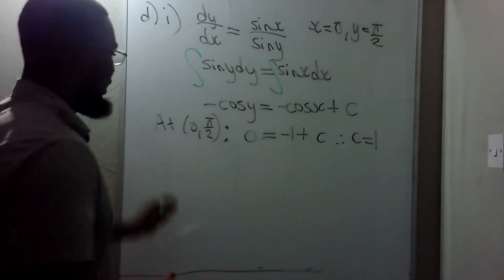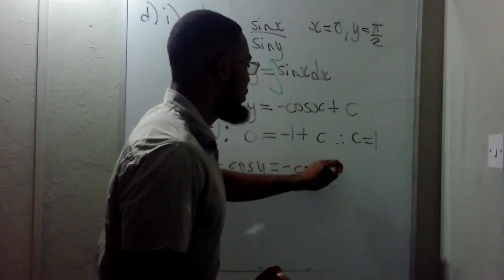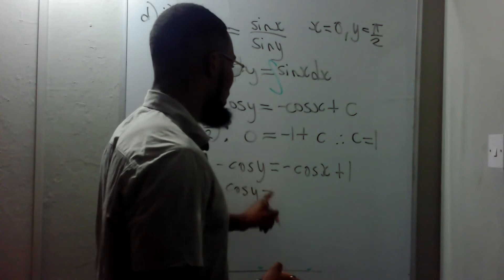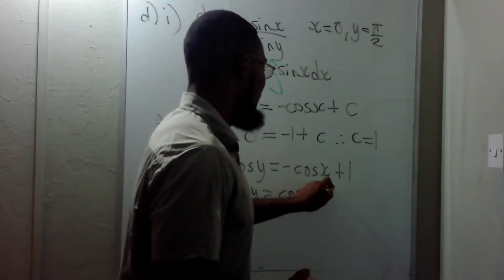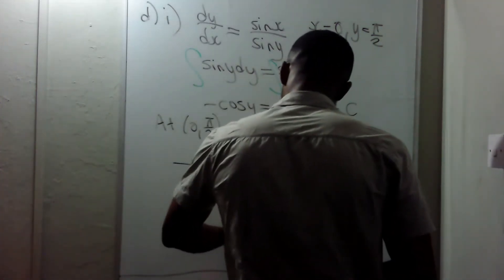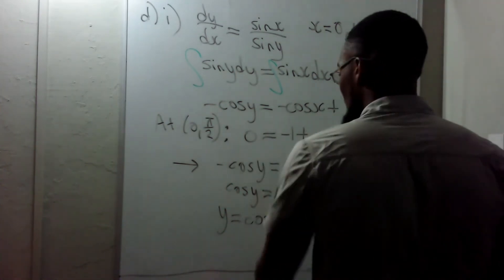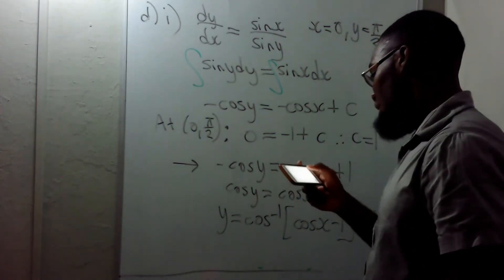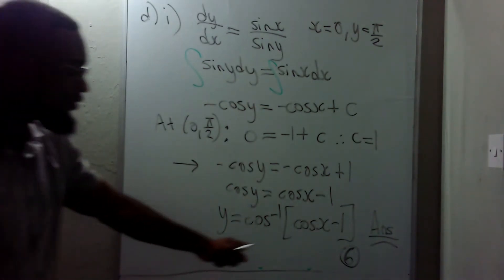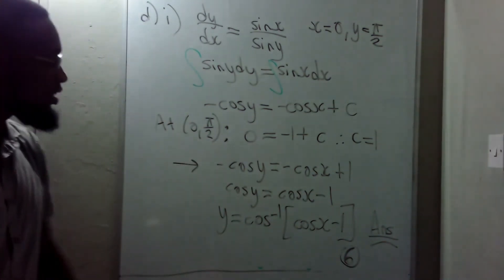Since c = 1, the equation is −cos(y) = −cos(x) + 1. Multiplying through by −1: cos(y) = cos(x) − 1. Making y the subject: y = cos⁻¹(cos(x) − 1). That's the answer — y equals cosine inverse of (cos(x) − 1), worth 6 marks.